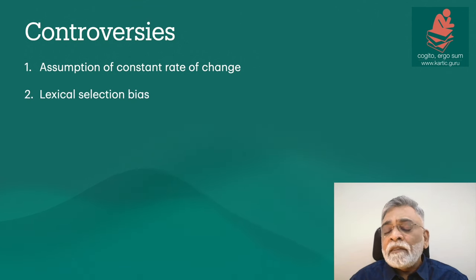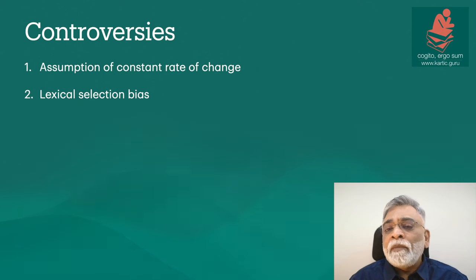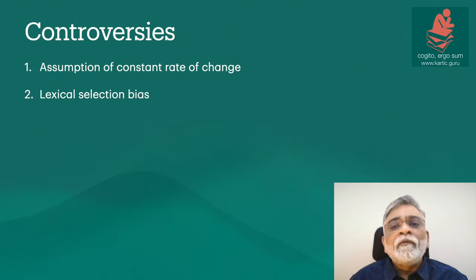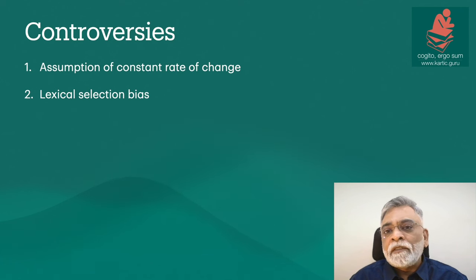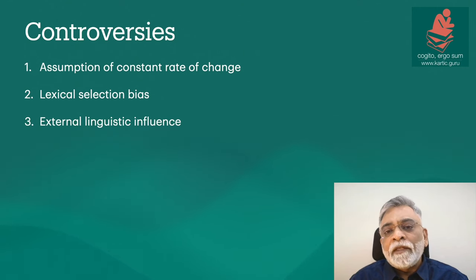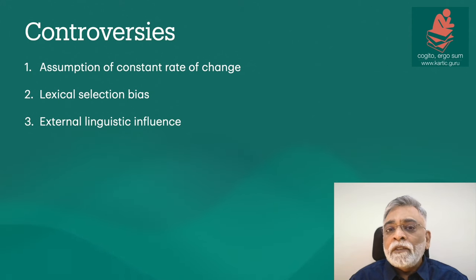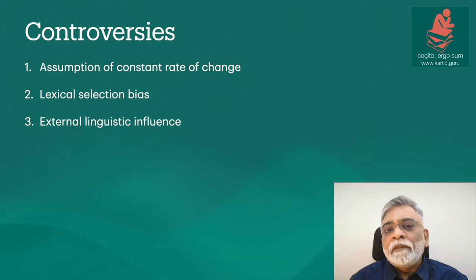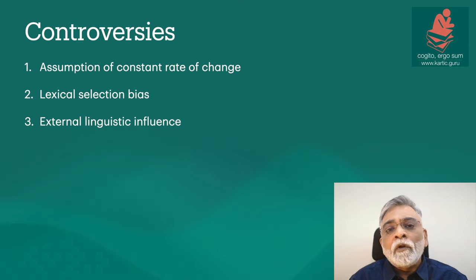The second problem is lexical selection bias. Glottchronology relies on the Swadesh list, but critics argue this list may not be universally applicable — the choice of words can skew results and ignore nuances in linguistic evolution. In some Polynesian languages, for example, terms related to seafaring are far more stable than those in the Swadesh list, making it less applicable in those contexts. Third, external linguistic influences: languages often borrow from each other, complicating the identification of genuine cognates. Such loanwords can distort the rate of lexical retention and thus the calculated time of divergence. For instance, modern Hindi has borrowed heavily from Persian and even English, which could distort its glottchronological relationship with other Indo-Aryan languages.